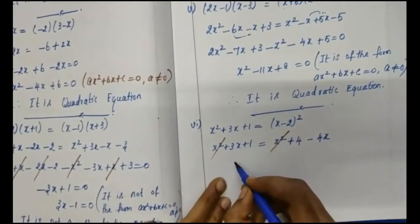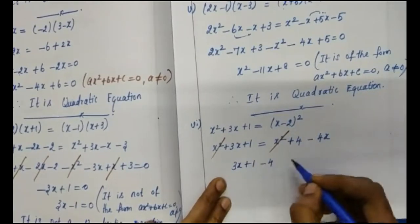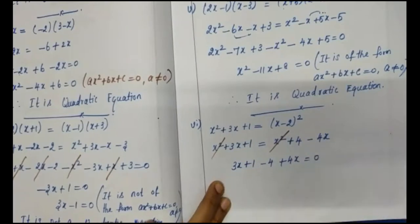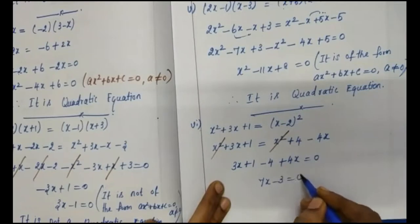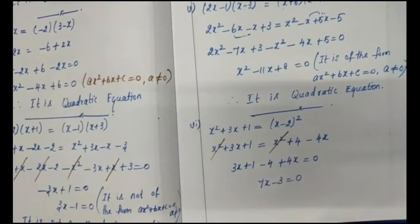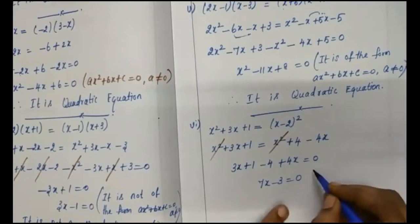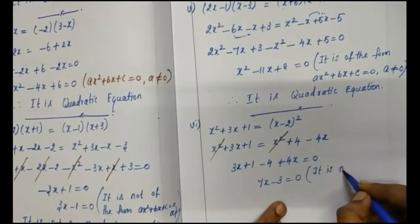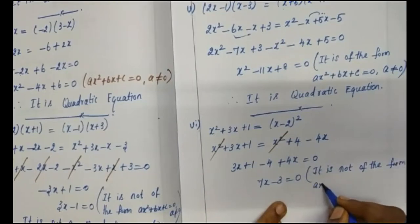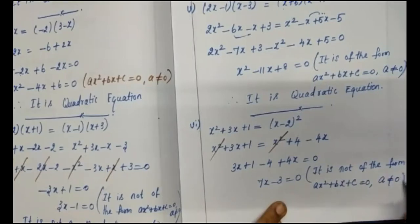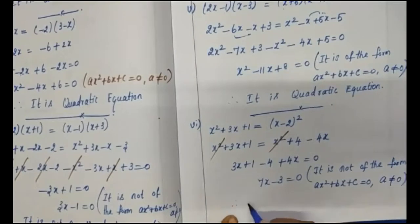Remaining terms: 3x plus 1 minus 4 plus 4x equals 0, which simplifies to 7x minus 3 equals 0. This is not of the form ax squared plus bx plus c equals 0 where a is not equal to 0, since there is no x squared term. Therefore, it is not a quadratic equation.